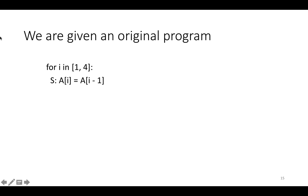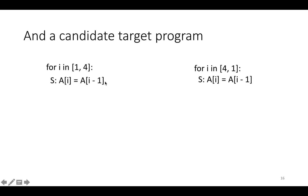Let's remember our original program, which is just this loop nest: for i in one to four, we execute the statement s, which does a sub i equals a sub i minus one. And we're given a candidate target program, except the for loop around the statement s has been reversed.